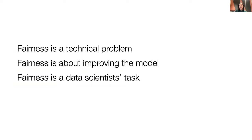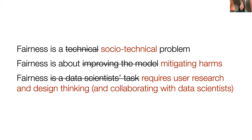Starting with fairness, I want to start with some common myths. You may have heard about bias mitigation algorithms, or some people call debiasing algorithms. You may think that fairness is a technical problem — that it is about improving the model and is a data scientist's task. Here are my corrections: if anything you take away from this tutorial about fairness, I hope it's the point that fairness is a socio-technical problem. Fairness work should ultimately focus on mitigating harms, meaning the human consequence, instead of the model. And lastly, fairness must be informed by user research and requires design thinking, ideally in collaboration with data scientists.